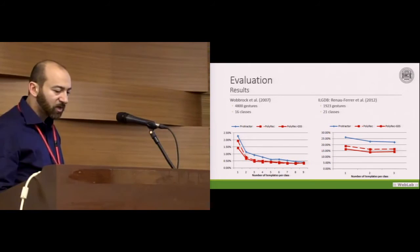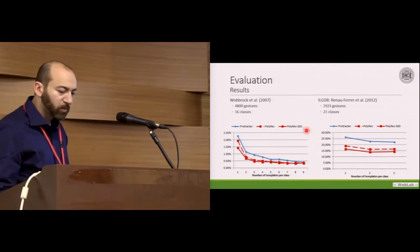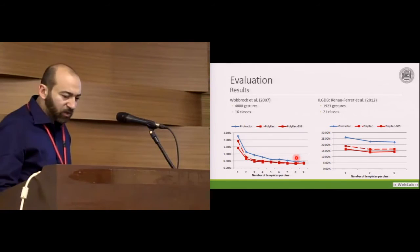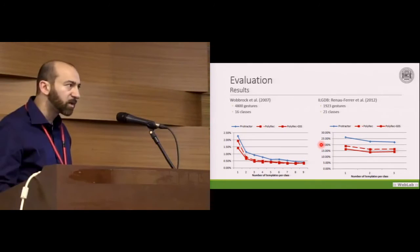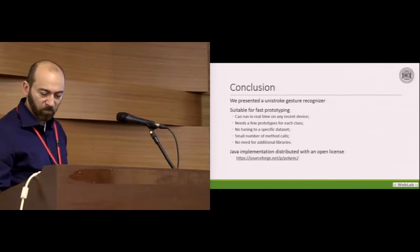And here are the results. The charts show the error rate as a function of the number of templates per class. The red line shows the performance of our recognizer, which was tested with and without the golden section search best angle search. The blue line shows the performance of Protractor, to which we compared. And we can see that our recognizer has a clear advantage in terms of recognition accuracy on both datasets.